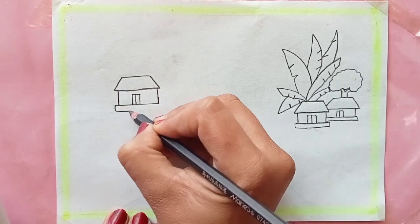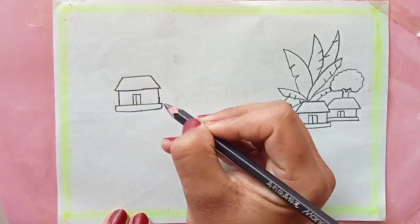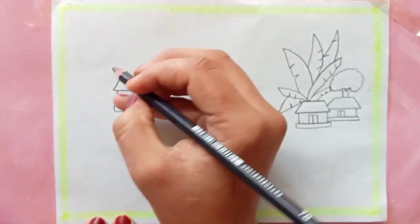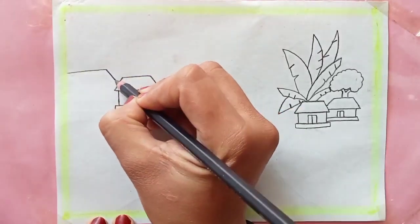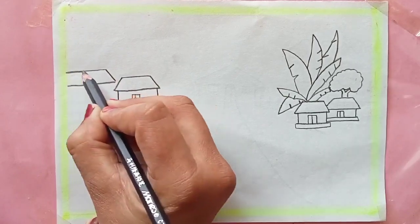So on the left side I have drawn two houses and a tree just like this. Now using the scale I'm drawing a straight line in the background and furthermore I'm drawing the bushes on that line in the background.